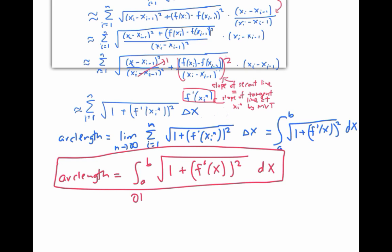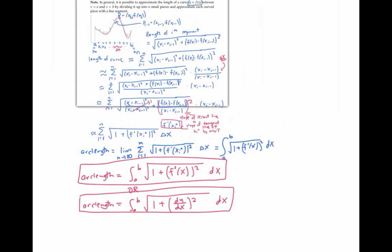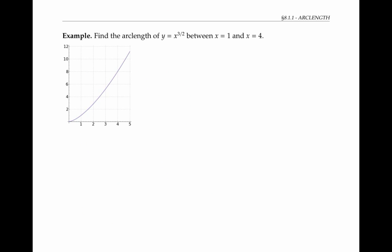Sometimes this formula is also written with the alternative notation of dy/dx instead of f prime of x. Let's use the arc length formula to find the length of the curve y equals x to the three-halves between x equals 1 and x equals 4. That's this section of the curve drawn.